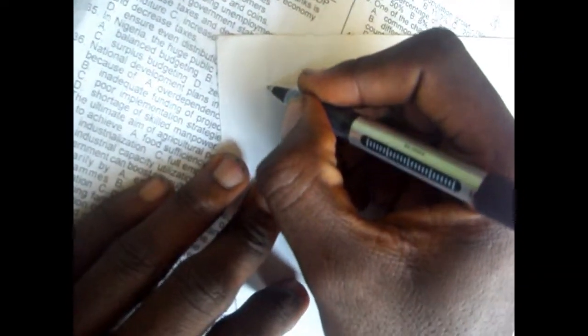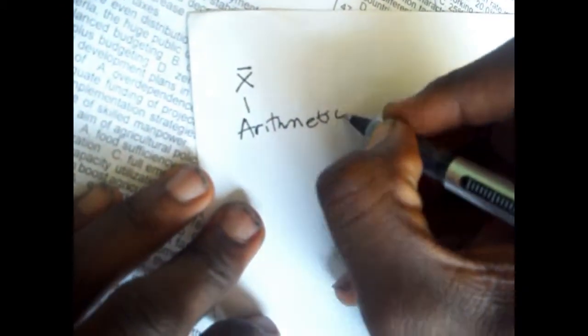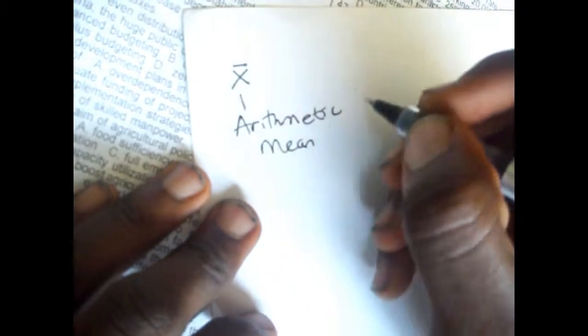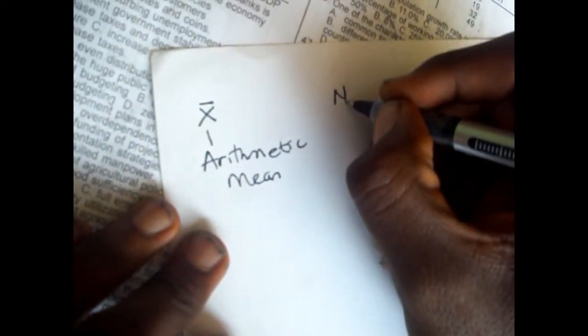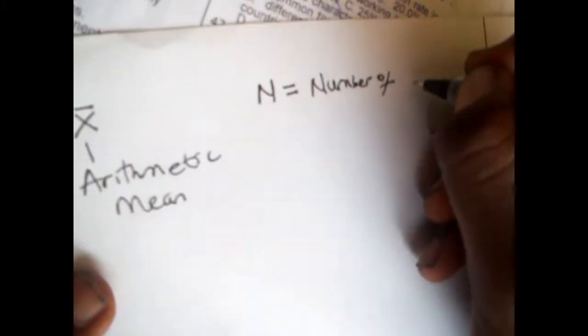To find Σfx, we need the formula for x̄. x̄ is our arithmetic mean, and n is the number of observations.